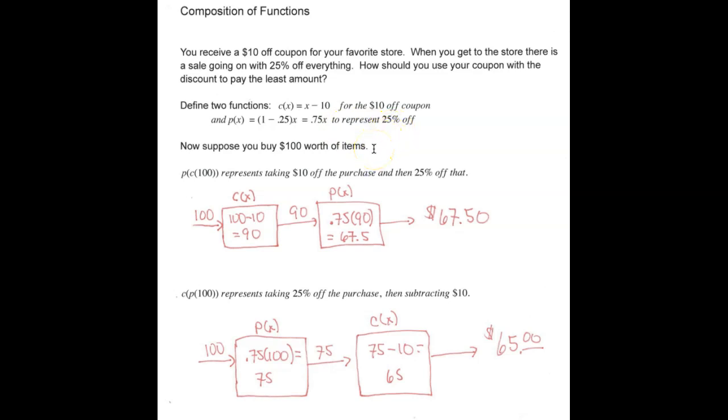So suppose you buy $100 worth of items. This composition is going to represent taking $10 off the purchase and then 25% off of that. So the amount of our purchase is 100. If we take $10 off, that's going to be 90. And then if we take 75% of the 90, we would spend $67.50.